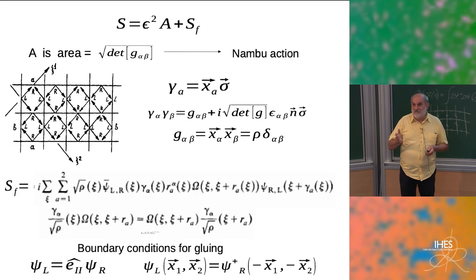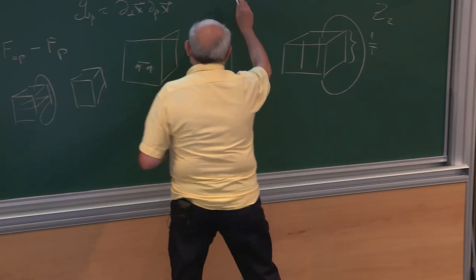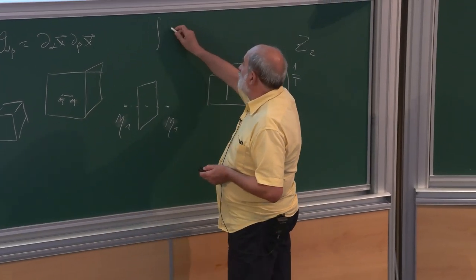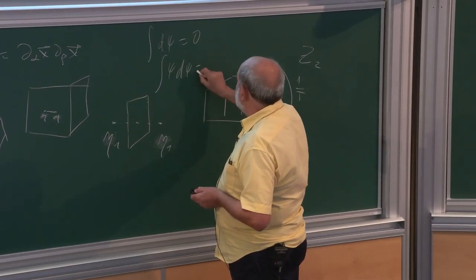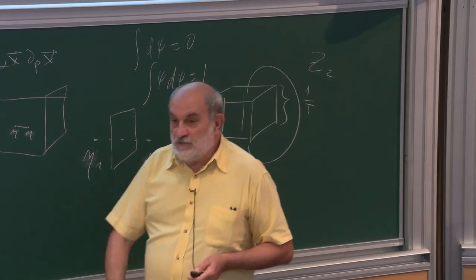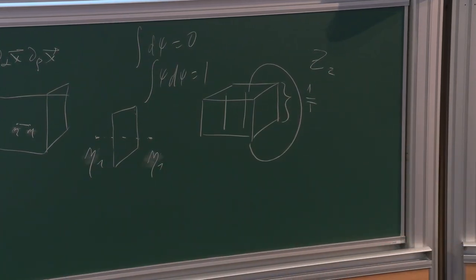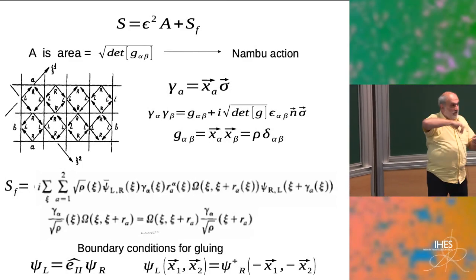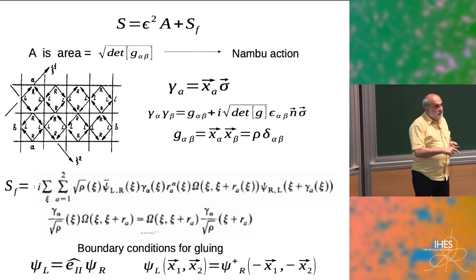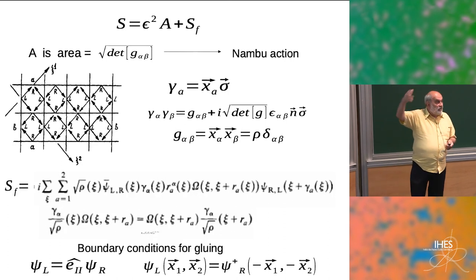This property of Grassmann integration — the integral of 1 dC equals zero, the integral of C dC equals one — is a strange type of integration. If you use these rules and calculate the integral, you will exactly reproduce φ(C) or φ(X), because you will cover in both ways all the trajectories, and on each you will have a product of the Ω matrices.